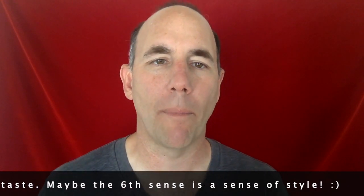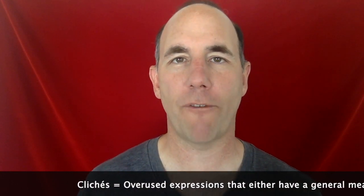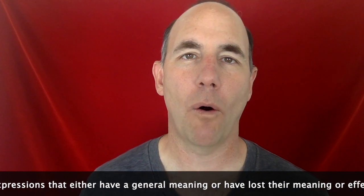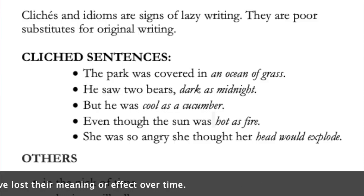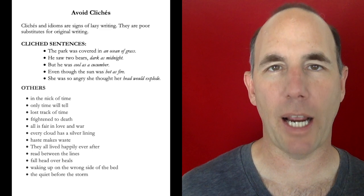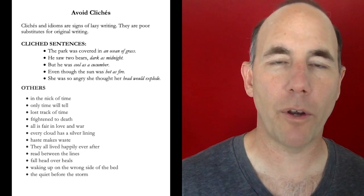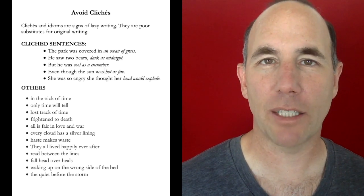Number ten: use clichés. Use lots of idioms and trite phrases. A cliché is like 'I'm so hungry I could eat a horse' or 'I'm starving to death' — trite phrases that have been in our language forever. Here are some clichés: 'The park was covered in an ocean of grass. He saw two bears, dark as midnight. He was cool as a cucumber, even though the sun was hot as fire.' We all use clichés every single day, but when it comes to your poetry, you need to do a search-and-destroy of your clichés and bad writing.